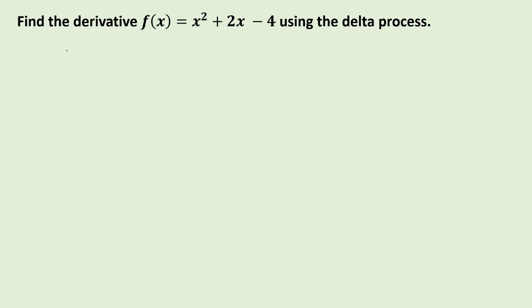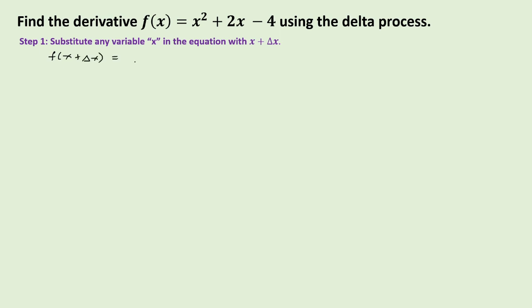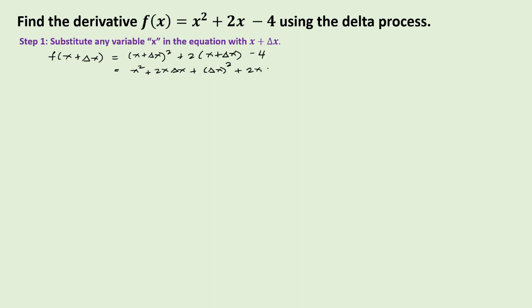Let us find the derivative of x squared plus 2x minus 4 using the delta process, guided by the four-step process. Step one: we find f of x plus delta x by substituting x plus delta x into the function. So we have x plus delta x squared plus 2 times x plus delta x minus 4, which expands to x squared plus 2x delta x plus delta x squared plus 2x plus 2 delta x minus 4.